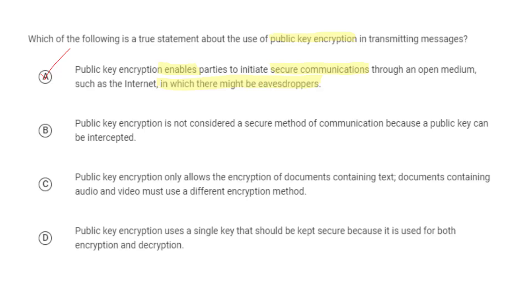Saying it just 'enables' might be an understatement, because without public key encryption, the internet really wouldn't be able to exist the way it does. In order to use the internet, you need to perform secure communication — sending messages in a way that others can't read. Without asymmetric encryption such as public key encryption, you would need to share a private key with whoever you're talking to ahead of time, which is just not feasible.